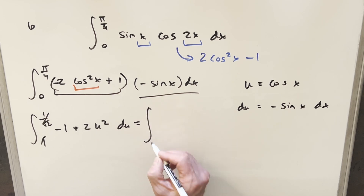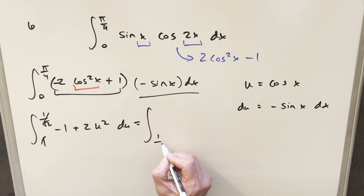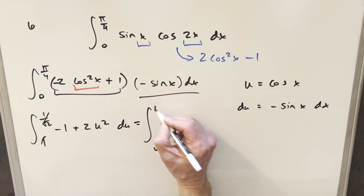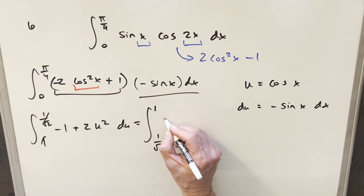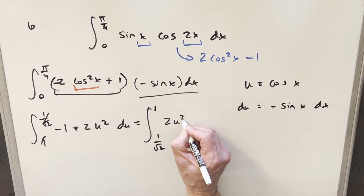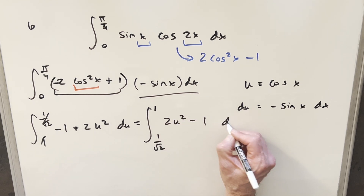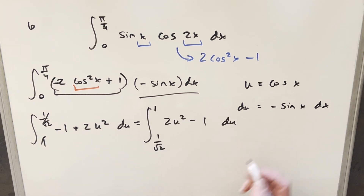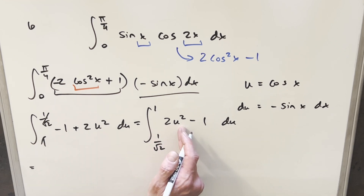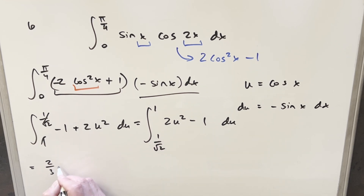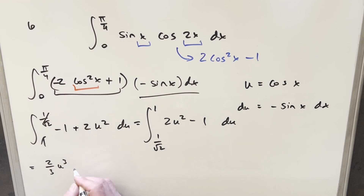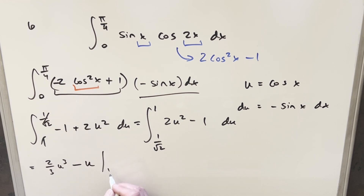Let me rewrite this cleanly. We have the integral from 1/√2 to 1 of 2u² - 1 du. Applying the power rule: the integral of 2u² is (2/3)u³, and the integral of -1 is -u. We evaluate from 1/√2 to 1.